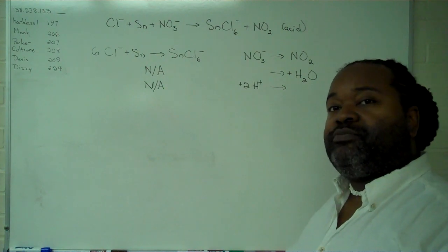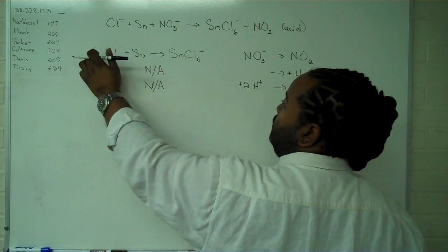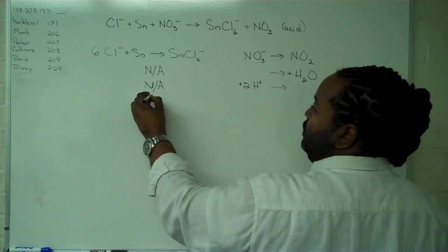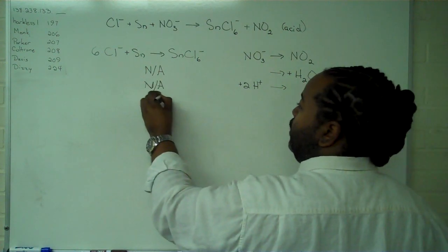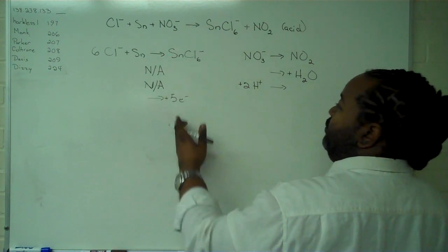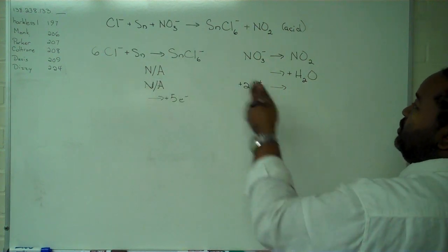and the only thing left to do is balance out our charges. We see here that we have six negative charges on reactants and one negative charge on the product. Since the only thing we can do is add electrons, by adding five electrons here, we now have negative six versus negative six. So mass and charge are balanced in our first half reaction.